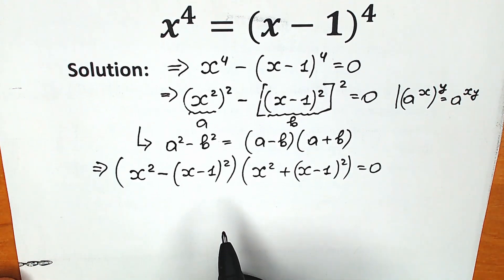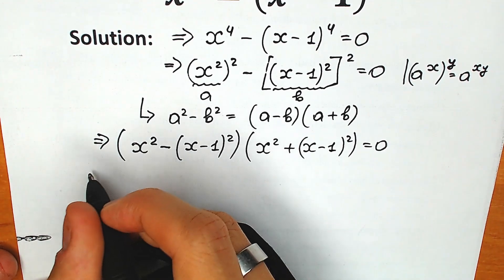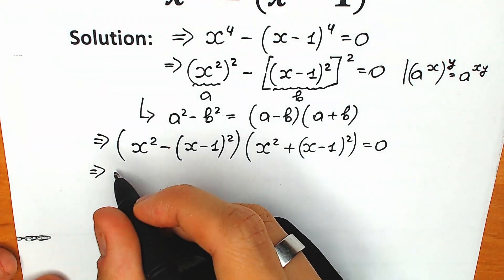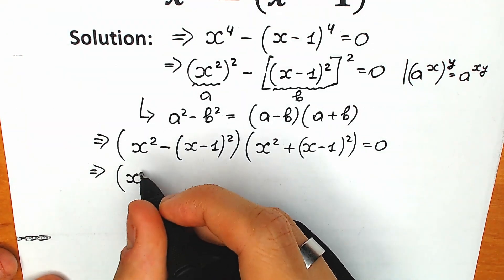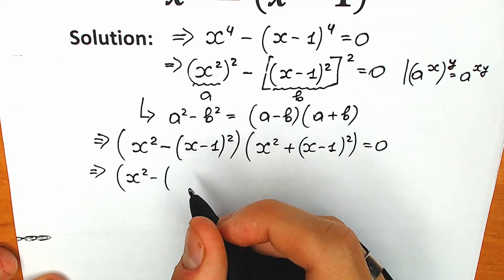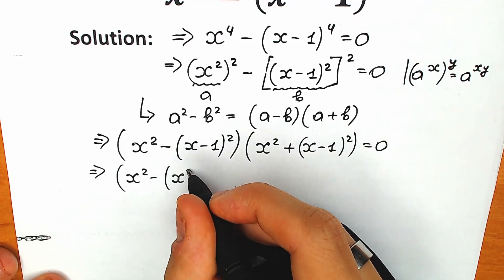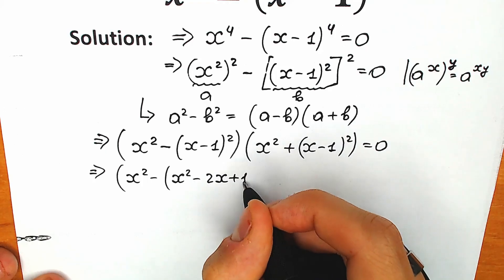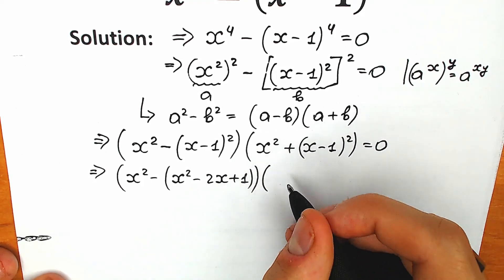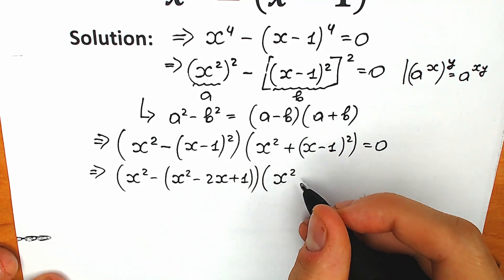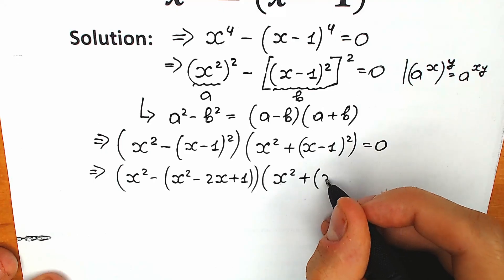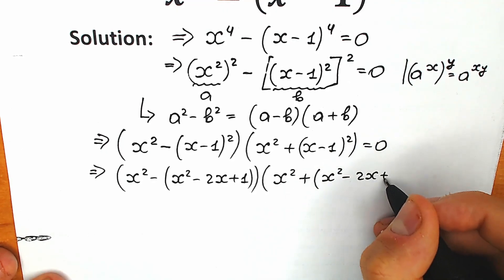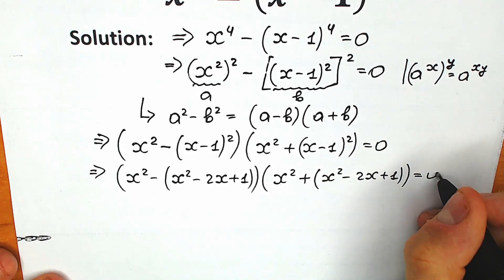Now let's simplify each parenthesis. In the first one, x minus 1 to the second power expands to x squared minus 2x plus 1. And the second parenthesis: x squared plus x squared minus 2x plus 1, equal to 0.